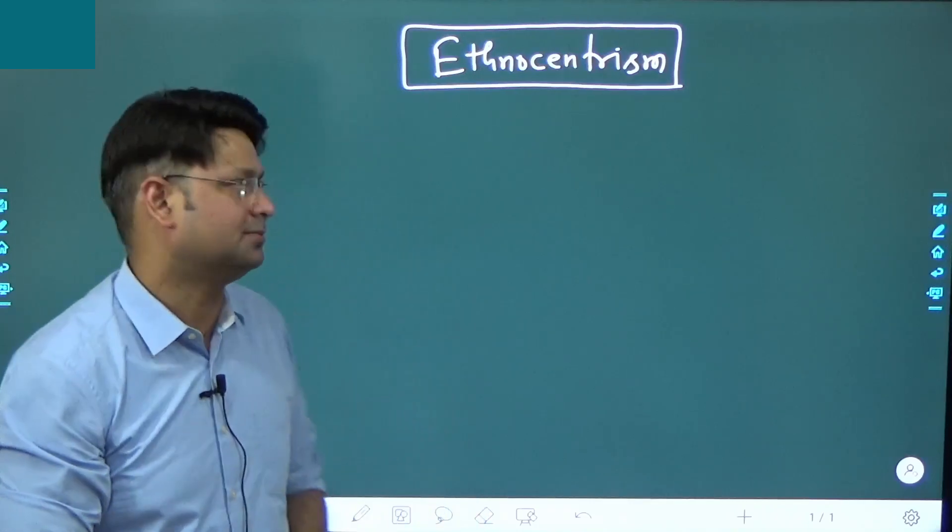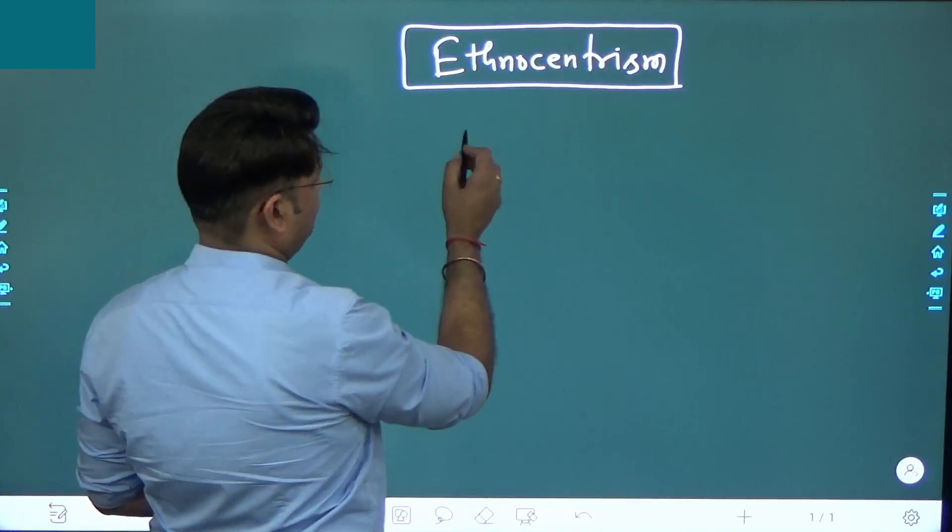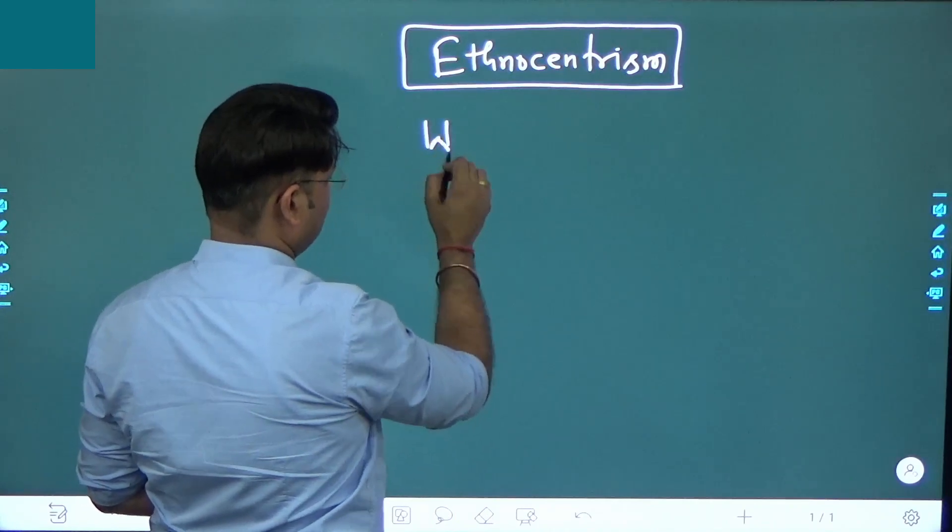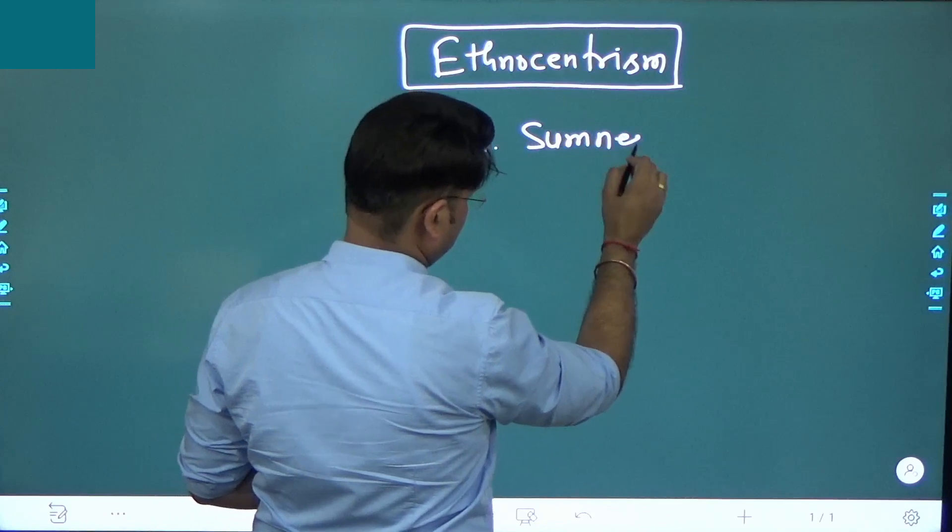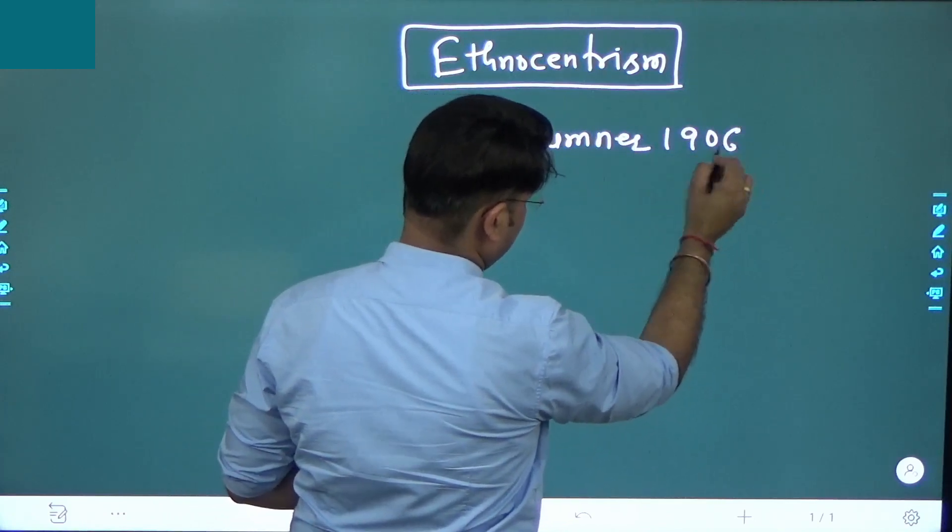The term ethnocentrism was coined by W.G. Sumner in 1906 in his work Folkways.